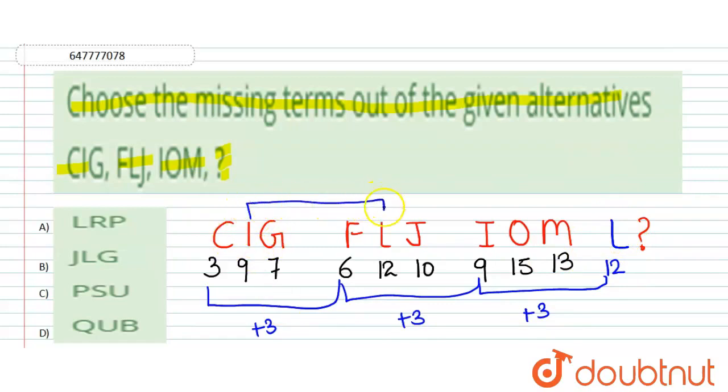Now next part यहाँ पर है आपके पास 9. So 9 plus 3 equals to 12, 12 plus 3 equals to 15. Now 15 plus 3 will be equals to 18. So 18 is for R, 18 is for R.